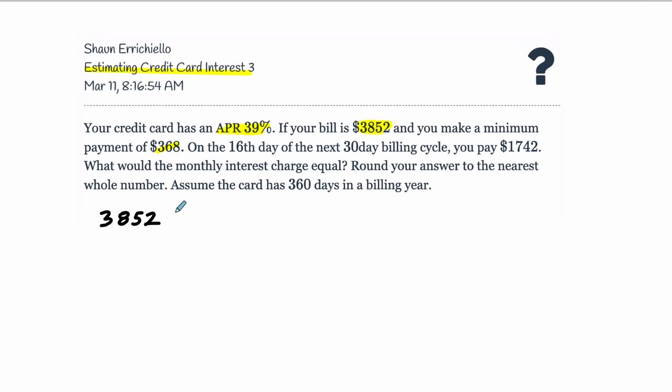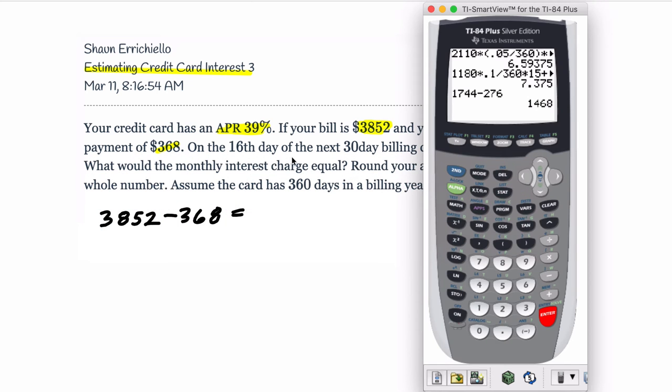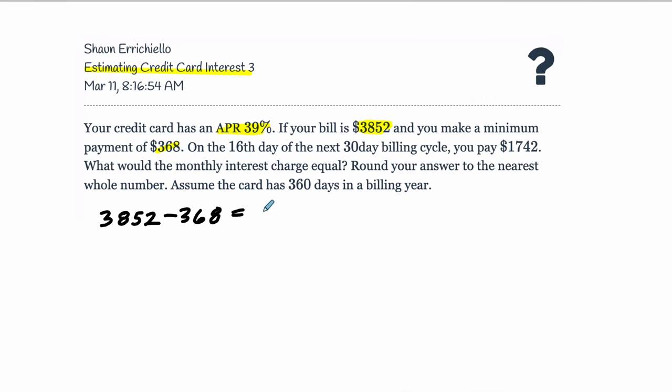So before we go further, let's just find that remaining balance. Let's subtract out the minimum payment and see what's left over. So it's $3852 minus $368, and we still owe $3484, so we still owe quite a bit. And this remaining balance right here, we're still going to owe interest on this remaining balance.